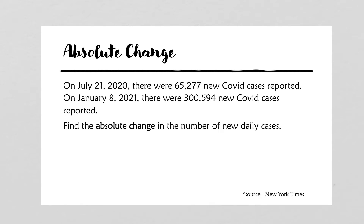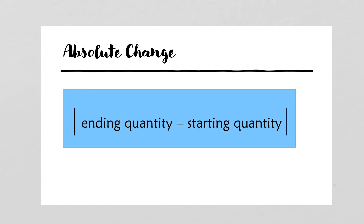What does it mean when we're asked to calculate the absolute change? Well, the absolute change, by definition, is simply the absolute value of the ending quantity minus the starting quantity. In simple words, it's the absolute value of the difference between the two numbers.